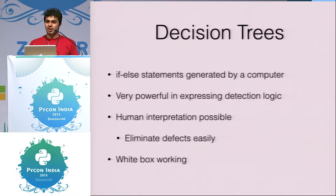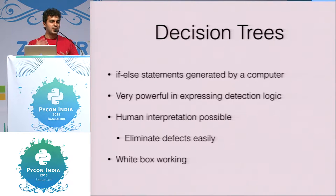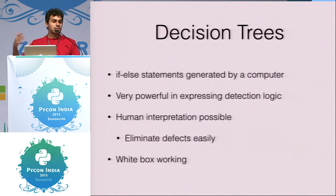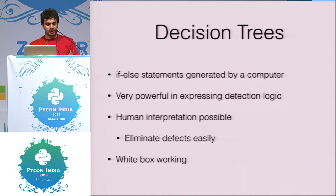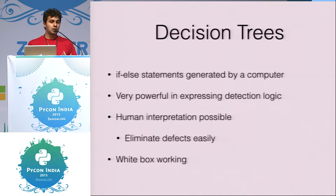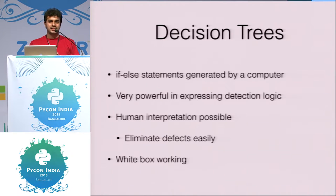Decision trees intuitively make sense to anyone in the security industry because we tend to think of maliciousness and benign activity in terms of rules: if this happened and this happened, then it is bad. It's also very expressive — if a URL's web page content has a certain entity, we don't like it. Testing it and humanly verifying it became very simple and easy to do.